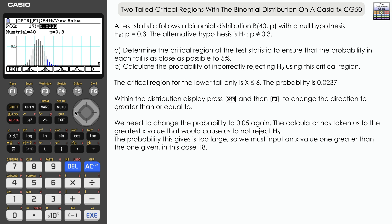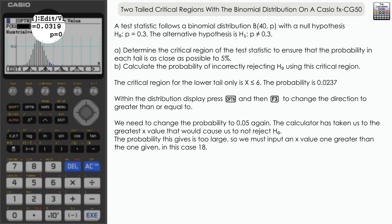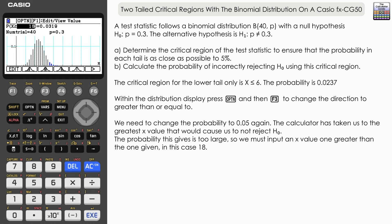The probability it gives is too large—greater than 0.05. So with the upper tail, we need to go one greater than the x value given. We're going to increase that to 18. You can see we have a probability of 0.0319, which is the size of the critical region in the upper tail. So we've got values greater than or equal to 18, all the way up to potentially 40. The actual significance level there is 0.0319, and we'll need that for part b.